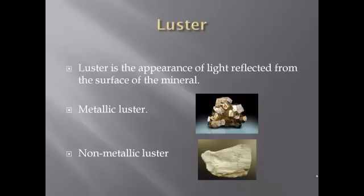Another property of a mineral is luster, sometimes referred to as shininess. We talked about reflection of light earlier in physical science. The two major types of reflectance of light on a mineral are metallic luster — the shininess you would see from gold or silver — and non-metallic luster, which is dull and does not reflect light very well. Non-metallic luster is quite often referred to as earthy luster.